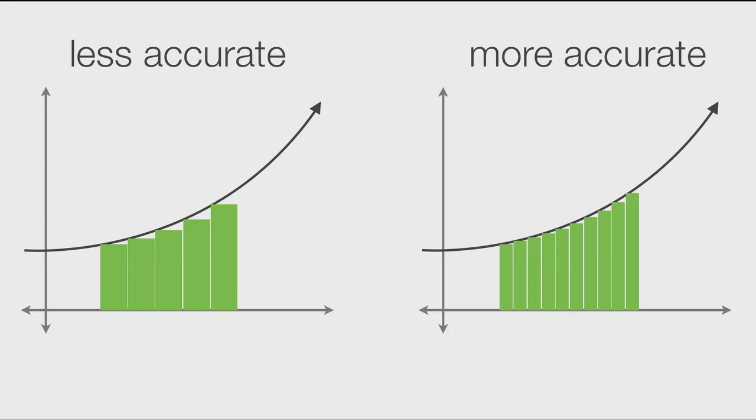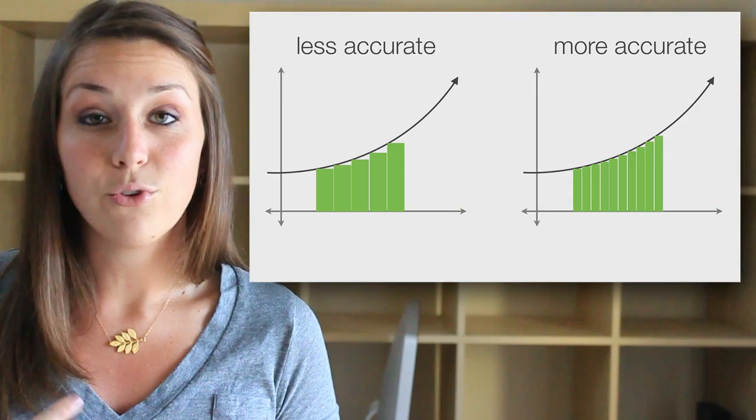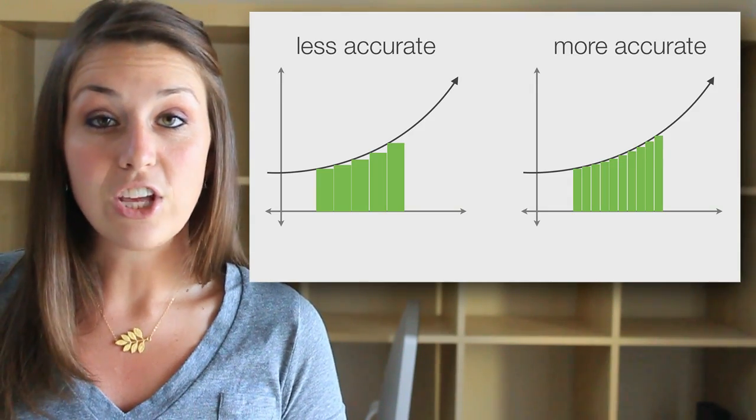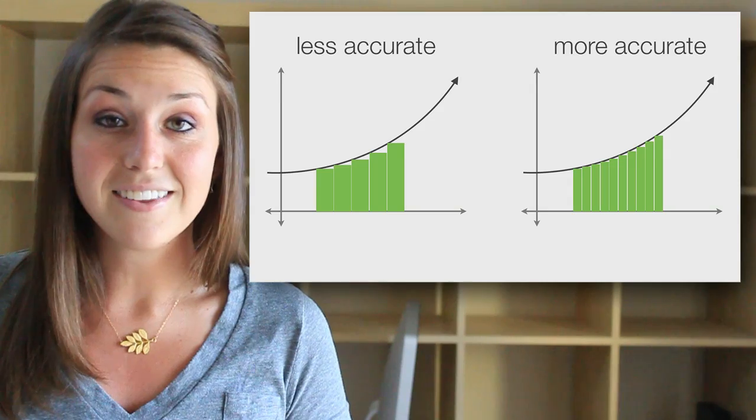As you can imagine, the more rectangles or trapezoids you can use, the more accurate your area estimation can be. If you imagine that you start using a larger and larger number of rectangles or trapezoids, until eventually you use an infinite number, this is the point at which you're making an exact area calculation.